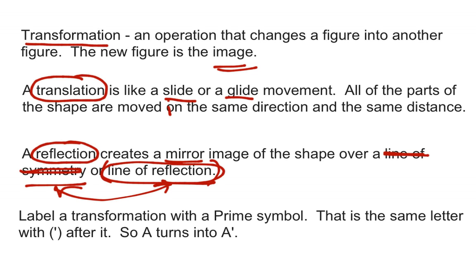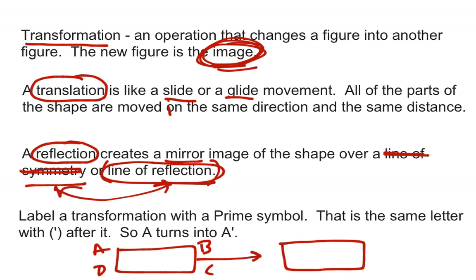Then the way you label a transformation, once you've made a transformation, now you have two figures. You have the original figure and then you have an image. And the way we label that is we use what's called prime. So if I have a rectangle, A, B, C, D, and I copy it and I move it, I have a new rectangle. And I'm going to name that A prime, B prime, C prime, and D prime. So that's how we label.